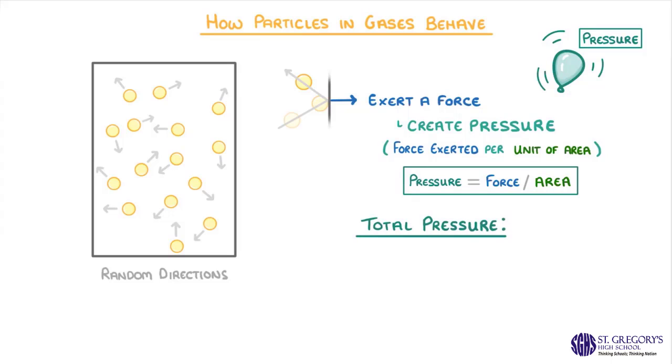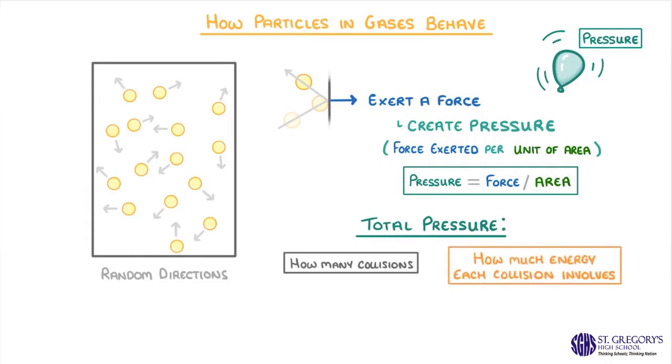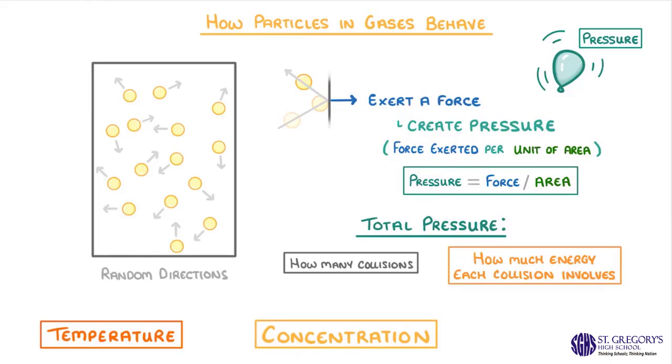The total pressure is going to depend mainly on two things: how many of these collisions there are, and how much energy each collision involves. And we can use these principles to understand how the temperature, the concentration, and the volume each affect the pressure.